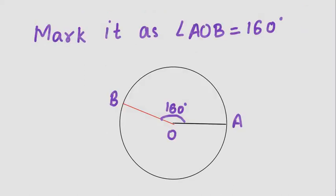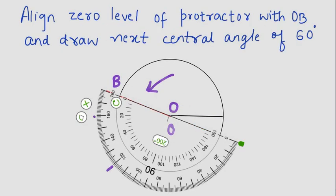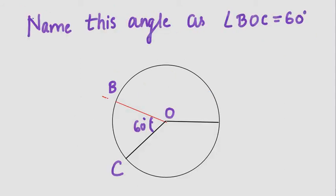Now mark it as angle AOB, which is 160 degrees. For the next angle of 60 degrees, align the zero level of the protractor with OB. Place the protractor like this and draw the next angle of 60 degrees. This angle is named angle BOC, which is 60 degrees.